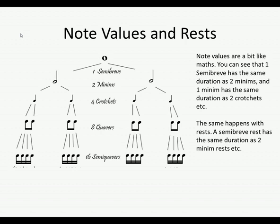Therefore, one semi-breve is equal to two minims, four crotchets, eight quavers, and sixteen semi-quavers.